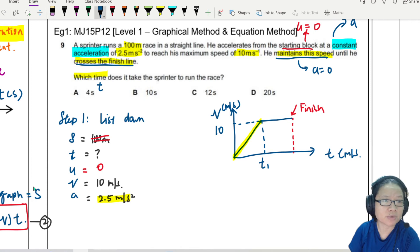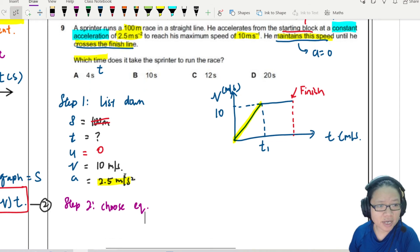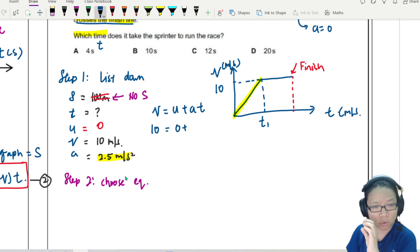So I will use the equation with no S. So I'm going to write this one as step two. Step two. Choose a suitable equation. So in this case, I will choose the equation with no S. So the equation with no S will be V equals U plus AT. Substitute inside. We've got 10 equals 0 plus 2.5 times T1. So from here, you get T1 is four seconds.